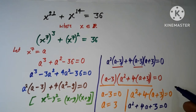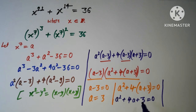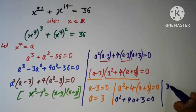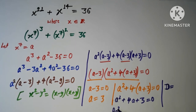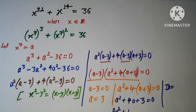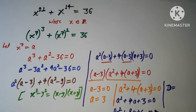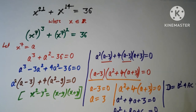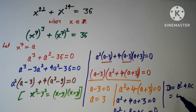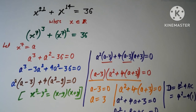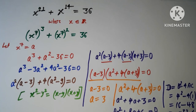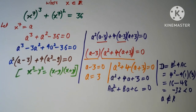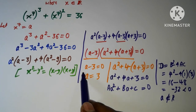For the quadratic a² + 4a + 3 = 0, I calculate the discriminant: b² − 4ac = 4² − 4(1)(3) = 16 − 48, which is negative — less than zero. Since the discriminant is negative, the roots are not real, so this quadratic gives no real solutions. The only real solution is a = 3.